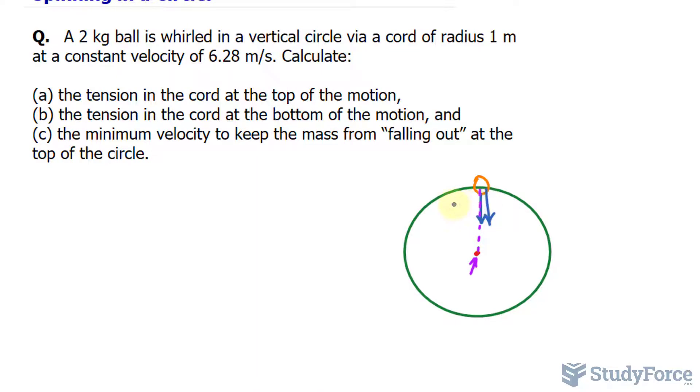Now I do realize that I drew the vectors the same length. That doesn't mean they're the same magnitude. And the reason why I drew the tension downwards as opposed to upwards is because we're considering this problem from the reference frame of the ball, not from the point of view of the person that is doing the spinning.